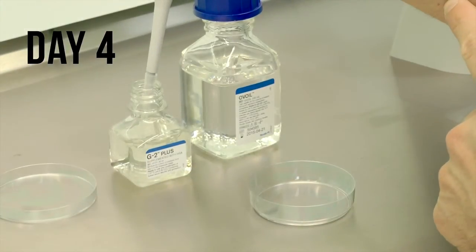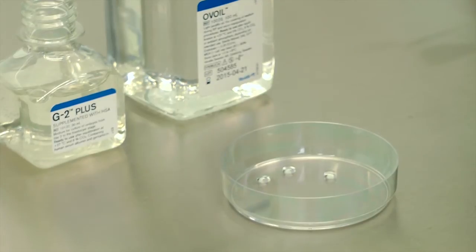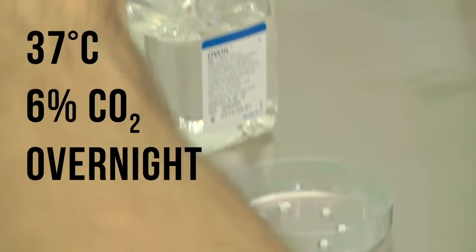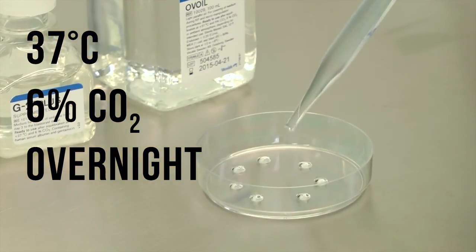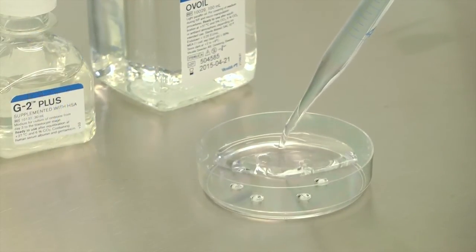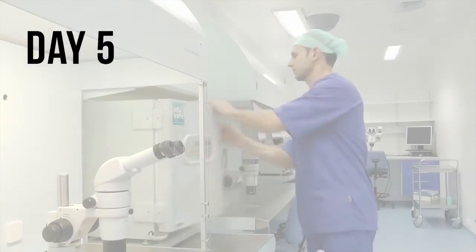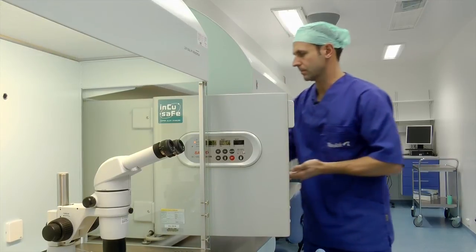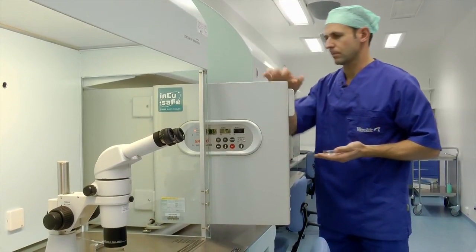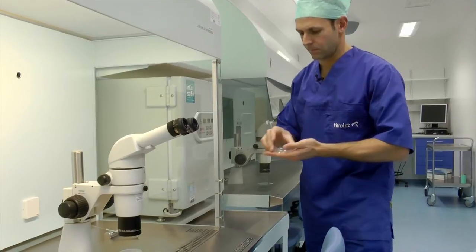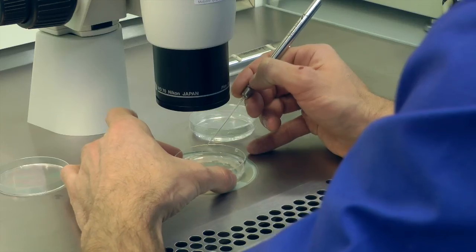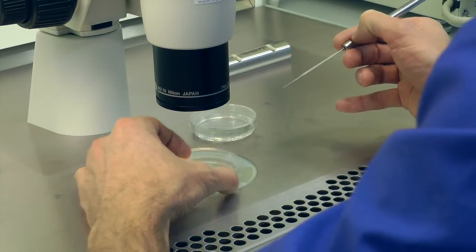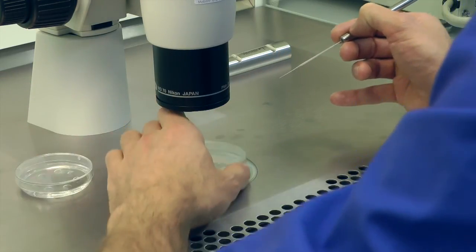On the afternoon of day 4, prepare a micro droplet culture dish using G2 Plus and oil. Equilibrate overnight at 37 degrees Celsius and 6% CO2. On the morning of day 4, use the first dish that you prepared the day before. Assess the embryos and make your decision on which embryos will be transferred, which ones will be cryopreserved and which ones will remain in culture until day 6.